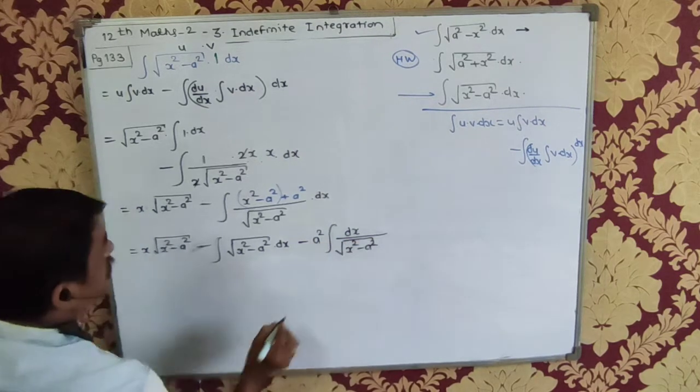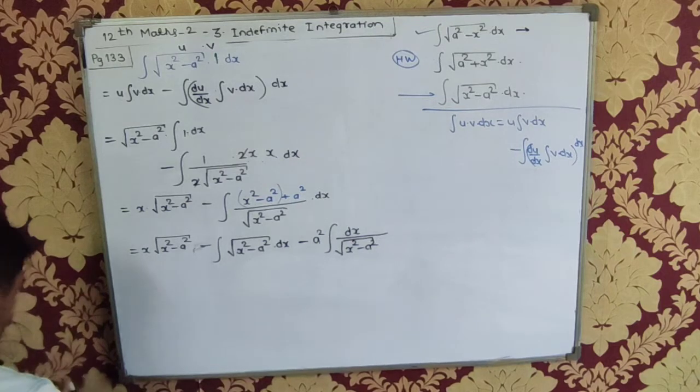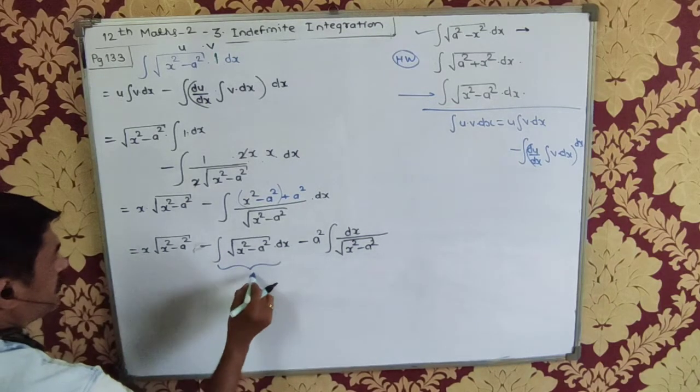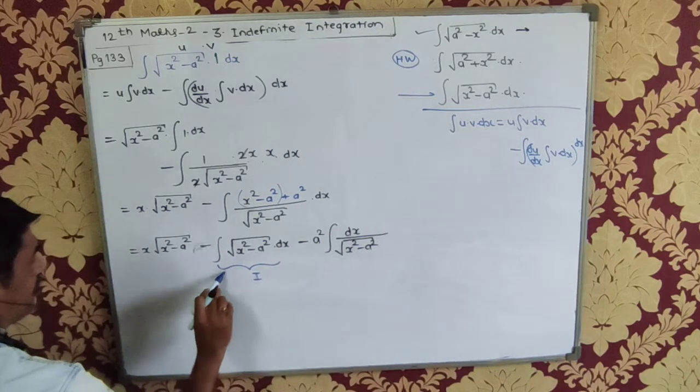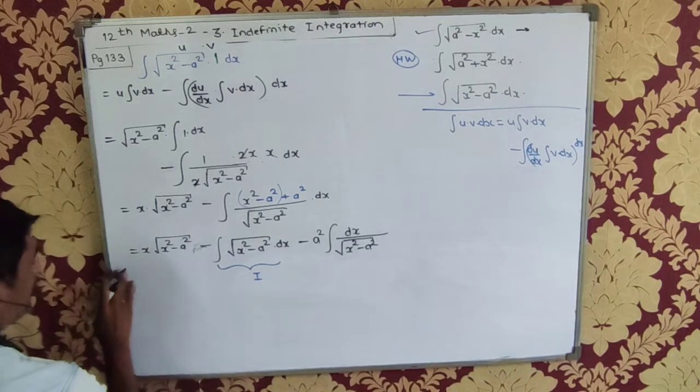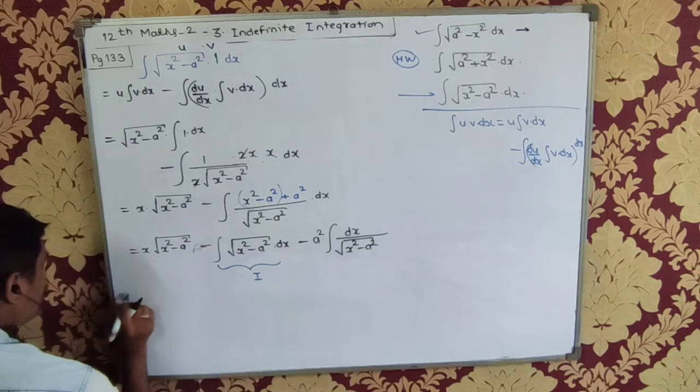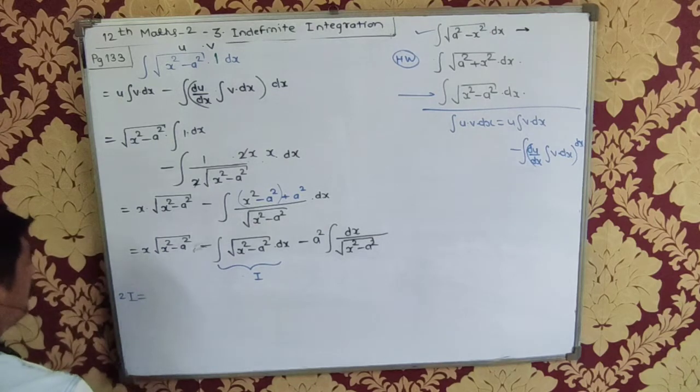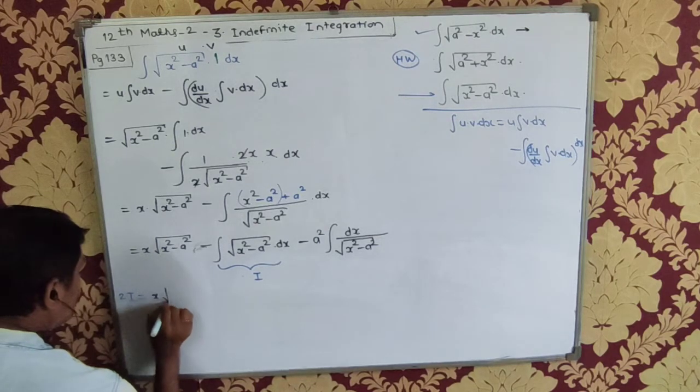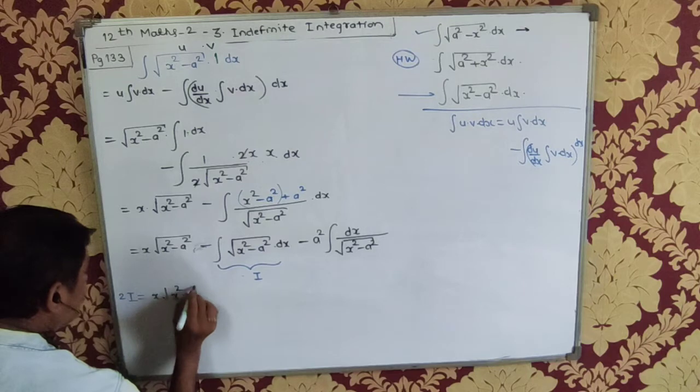Okay? Now, this is i itself. Rather, minus i. Either that is i or plus i. So i plus i is 2i equals x√(x² - a²).